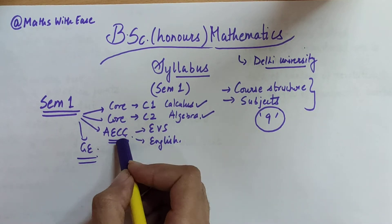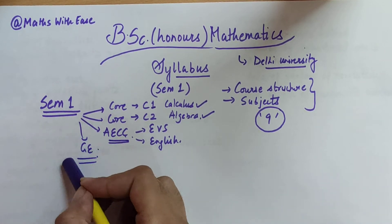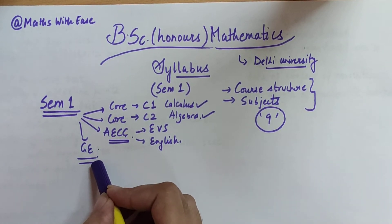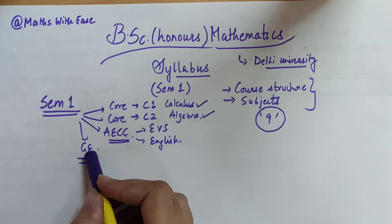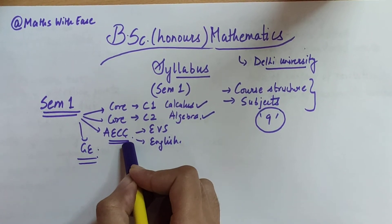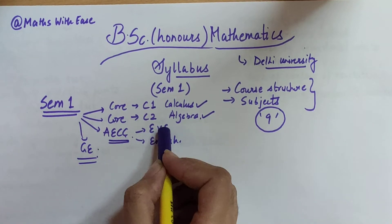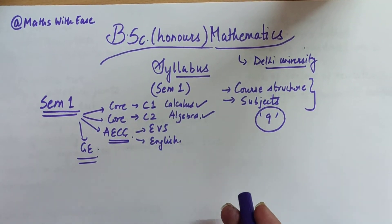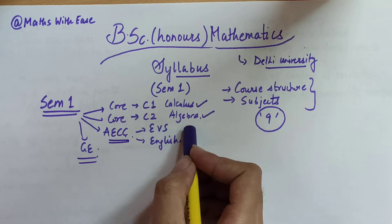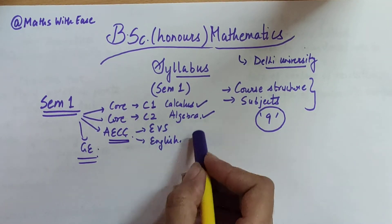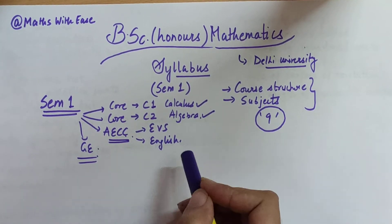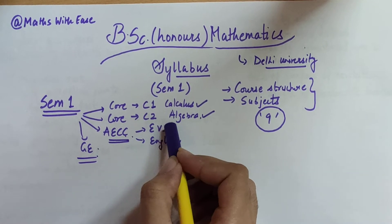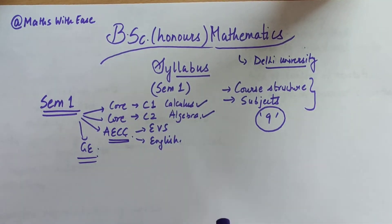I have made separate videos on GE and AECC. GE is different for different people depending on what the college offers and what a particular student opts for, so in this video we won't discuss GE. Coming to AECC, it has two options: either EVS, that is Environmental Science, or English. It depends on the course - you need to study both subjects.